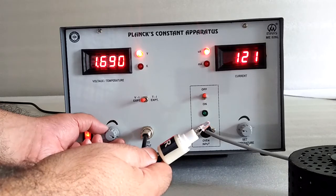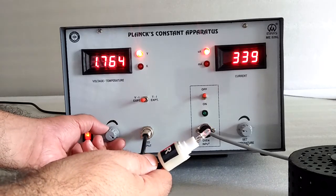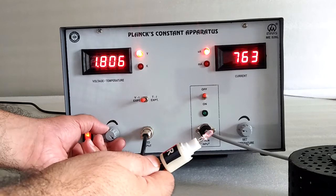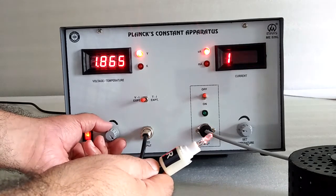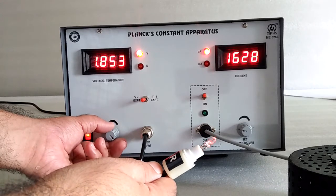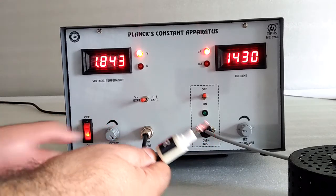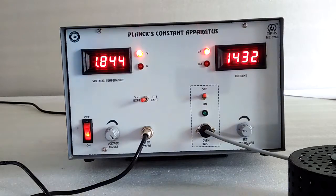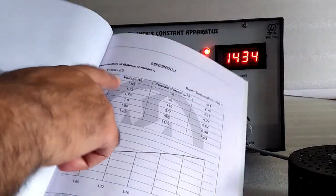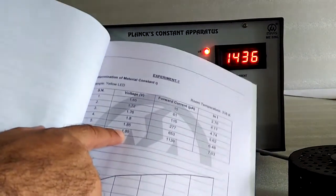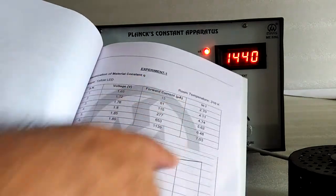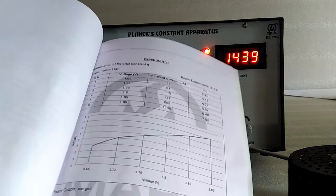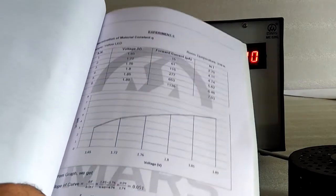Note down the voltage and simultaneously note down the current. Don't increase the value above this and raise the voltage to 1.89 forward current. Then, make the graph and with the help of slope, you find the material constant.